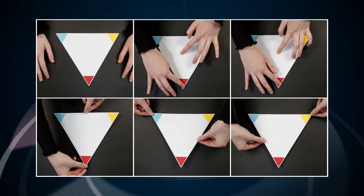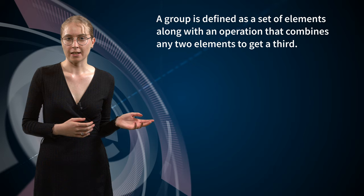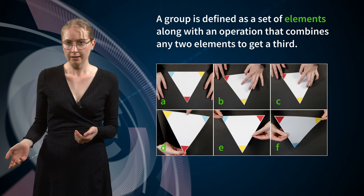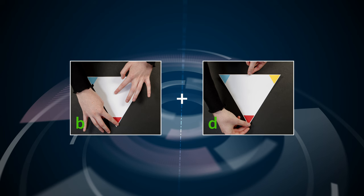These six symmetries are the elements of the symmetry group of the equilateral triangle. Mathematicians call it D3, where the D represents that it is the symmetry group of a regular polygon, and the three is because the triangle has three sides. The elements of the set are the six symmetries, here labelled from A to F. The operation is composition, and we are going to use a plus symbol to represent it. For example, B plus D simply means carrying out B first and following it with D — first rotating the triangle by 120 degrees, and then reflecting it along the vertical axis.